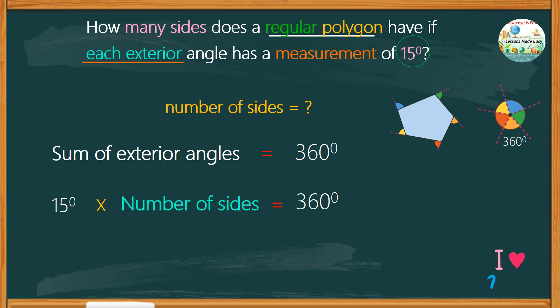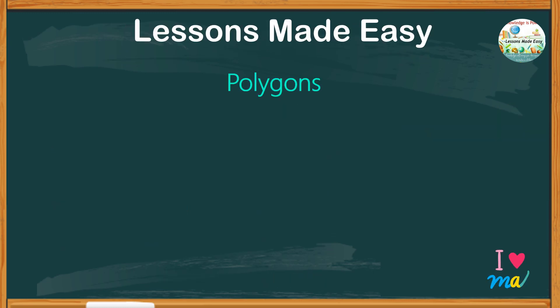In other words, to find the number of sides, all we need to do is divide 360 by 15. This will give us a quotient of 24. Therefore, the answer to the question is 24 sides.